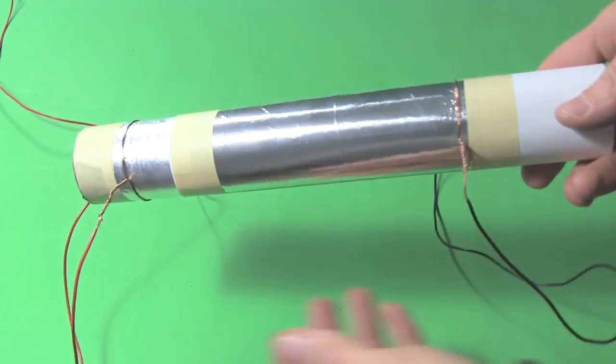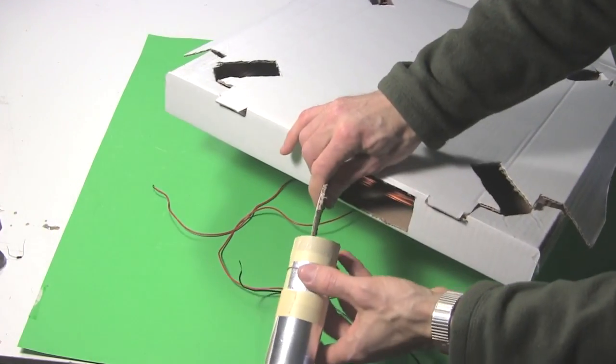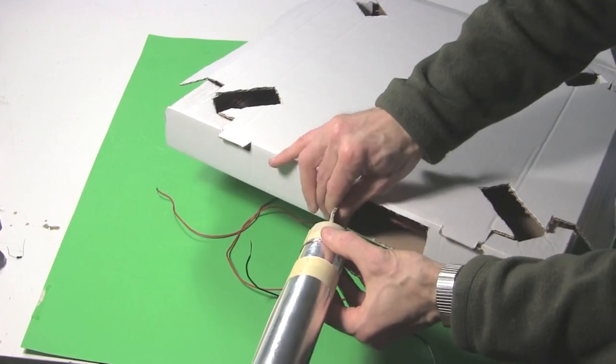And there we go. Two wires now attached to the variable capacitor. Finally I cut a tab out of the top of the box for putting the capacitor on when in use.